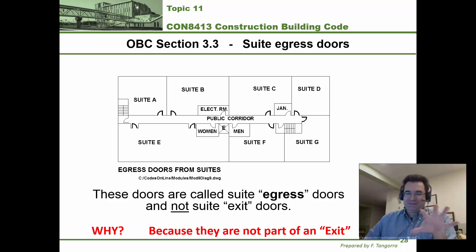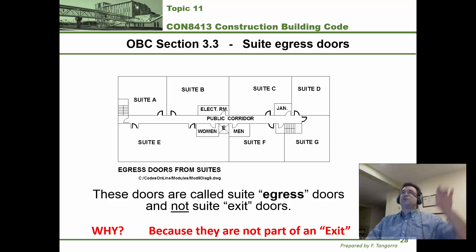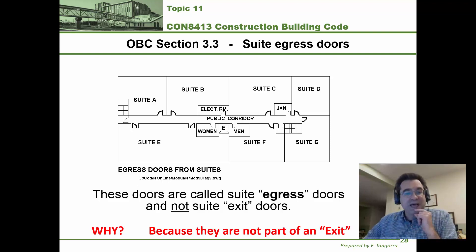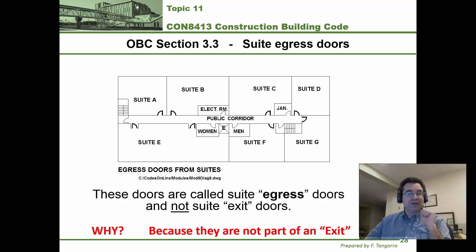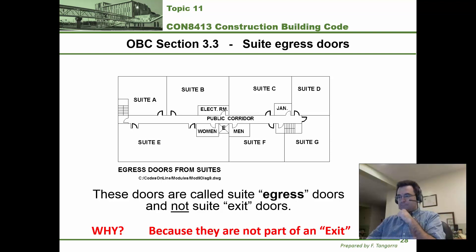A rough rule of thumb: an exit door or exit starts wherever you see that exit sign at the top — remember Topic 10. If you exit a classroom and there is no exit sign above that door, it's not an exit door; it's an egress door because it's still part of access to exits. However, there are some classrooms that open onto a corridor that actually have an exit sign above the door — for example, a number of classrooms in the A building have doors that are actually exit doors because that corridor is also an exit.